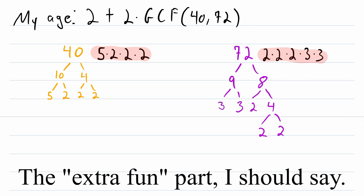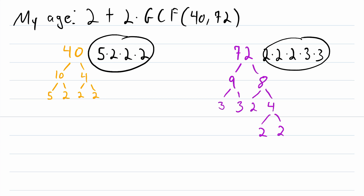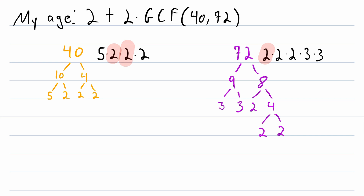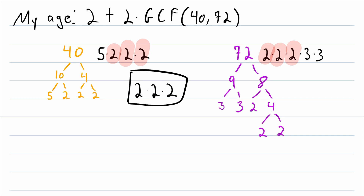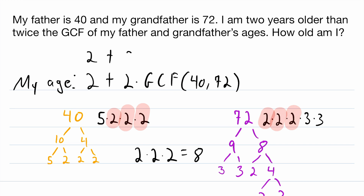Now the fun part is using these prime factorizations to find the greatest common factor. All you have to do is multiply the common factors together. What factors are common to both factorizations? They have three 2s in common, and that is all. So the GCF is 2 times 2 times 2, which equals 8. Going back to our formula, my age equals 2 plus 2 times 8, which is 2 plus 16, so the answer is 18.